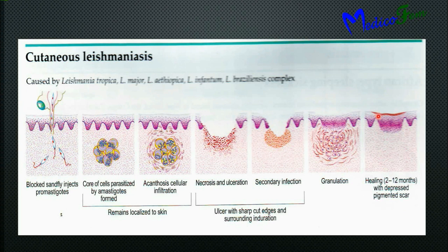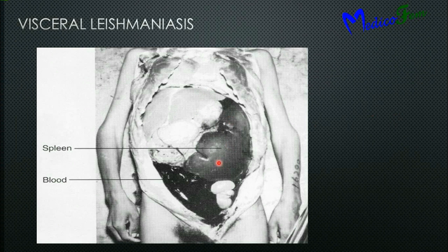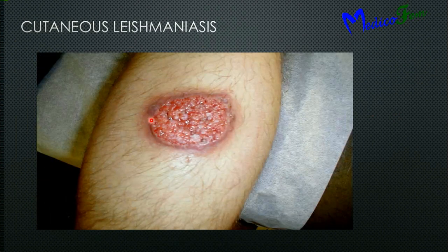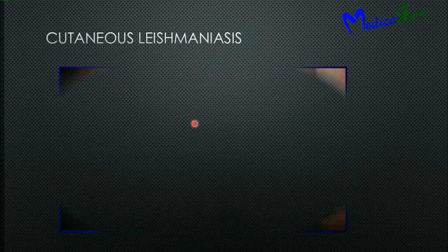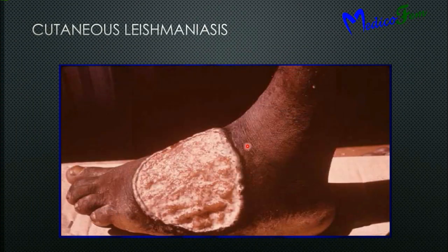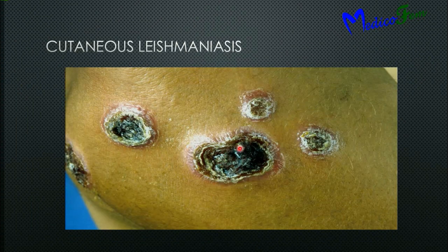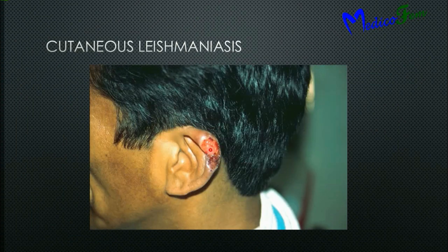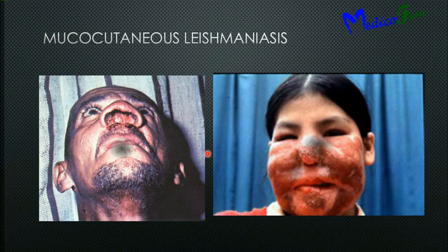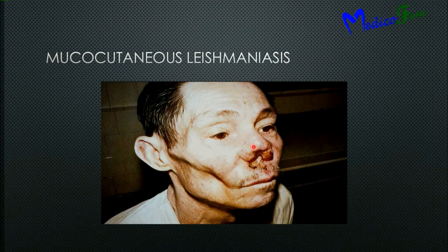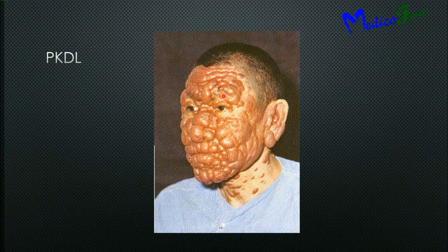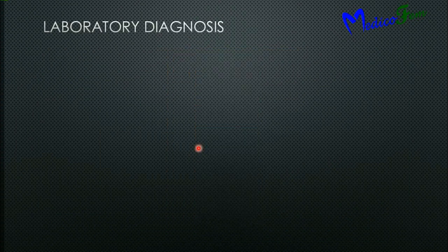This is a visceral leishmaniasis patient having massive splenomegaly and accumulation of fluid in the peritoneum. A case of cutaneous leishmaniasis showing a lesion at the site of sandfly bite with granulation tissue. Lesion on the foot — a very large lesion with granular tissue. Sandfly bite site and scarring at cutaneous leishmaniasis. Lesion on the pinna. Mucocutaneous leishmaniasis infecting the nasal mucosa and mucosa around the oral cavity. This is the classic case of post-Kala-azar dermal leishmaniasis infecting the whole face.